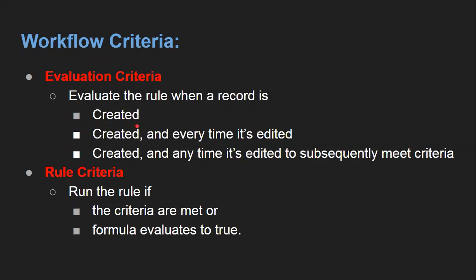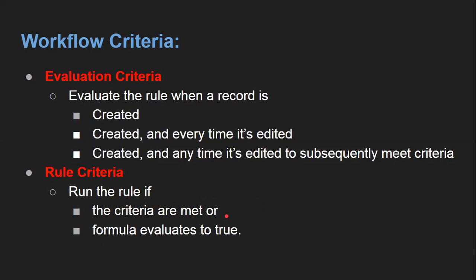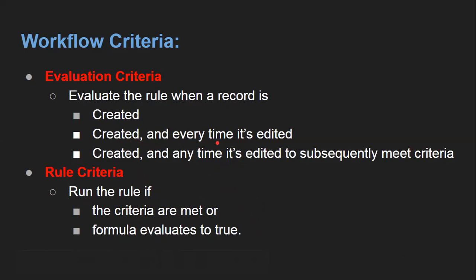Three options are available. First is 'created'. Second is 'created and every time it's edited'. Third is 'created and every time it's edited to subsequently meet criteria'. Based on these options, if any one is selected and it is true, then the workflow rule matches its rule criteria. In rule criteria, you can mention two things: either you can set criteria that should be met, or you can implement a formula that should evaluate to true. If your record is created and the criteria or formula is true, then the workflow rule will fire. Or if you selected the second or third option and your rule criteria matches or formula evaluates to true, then your workflow rule will also be executed.